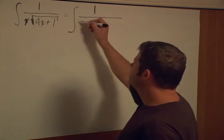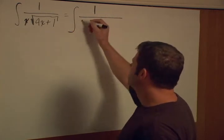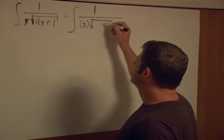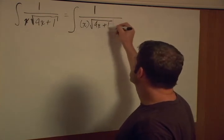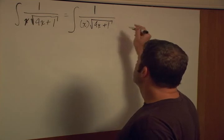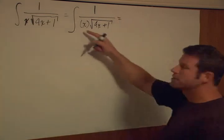and I'm going to put in parentheses here. The x I'm going to say is x in parentheses times the square root of 4x plus 1. And now what I'm going to do, I'm going to expand this parentheses.